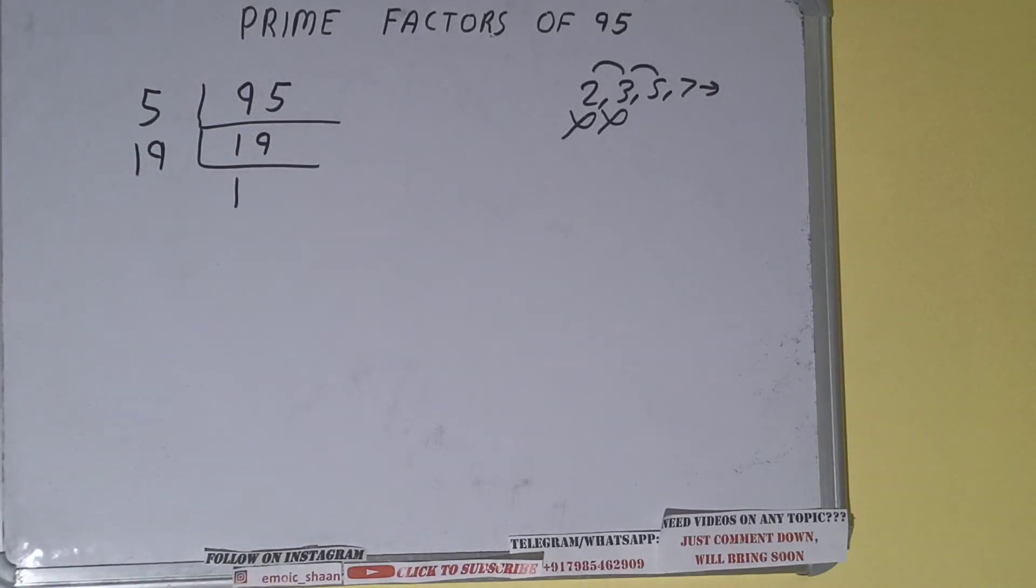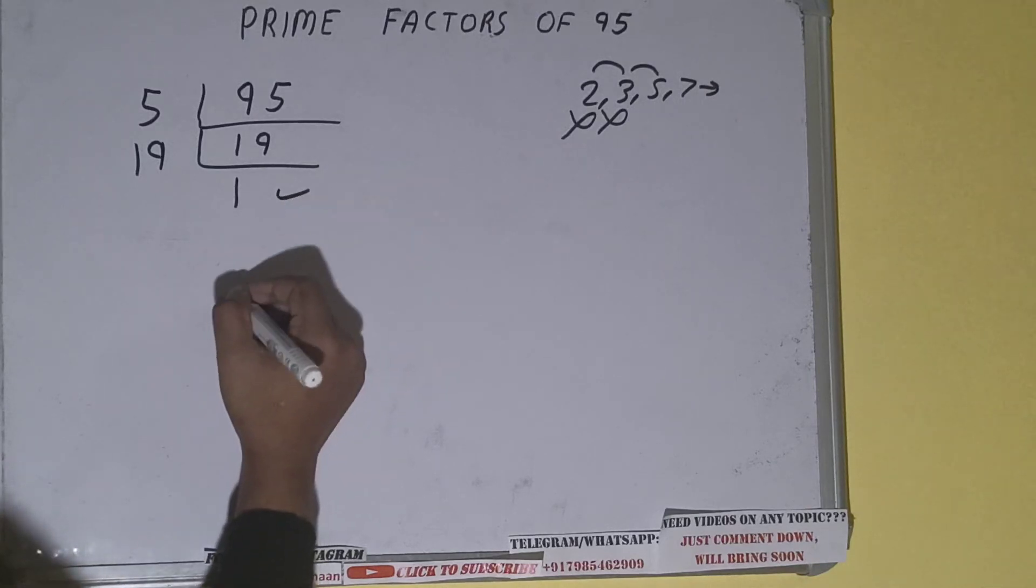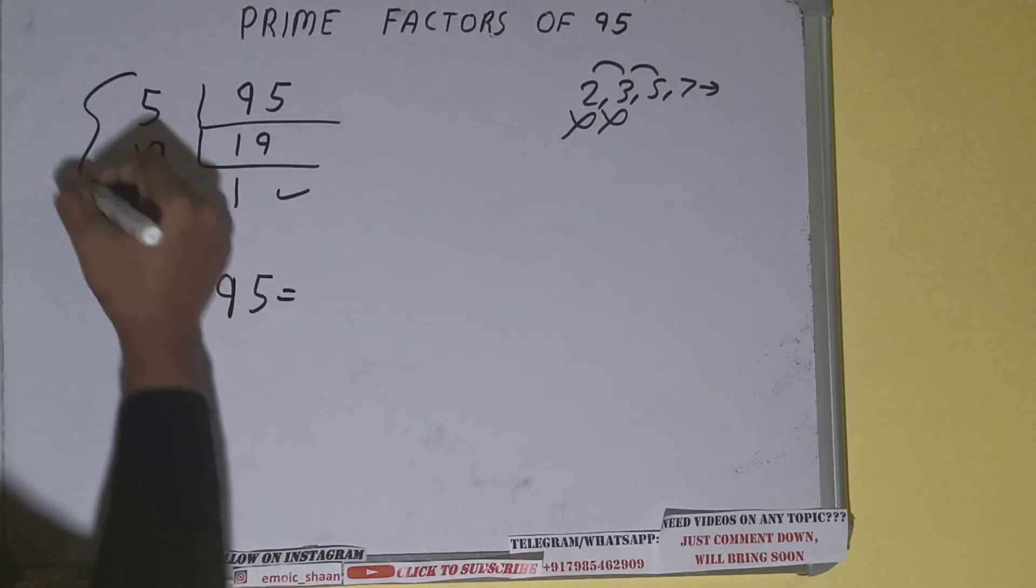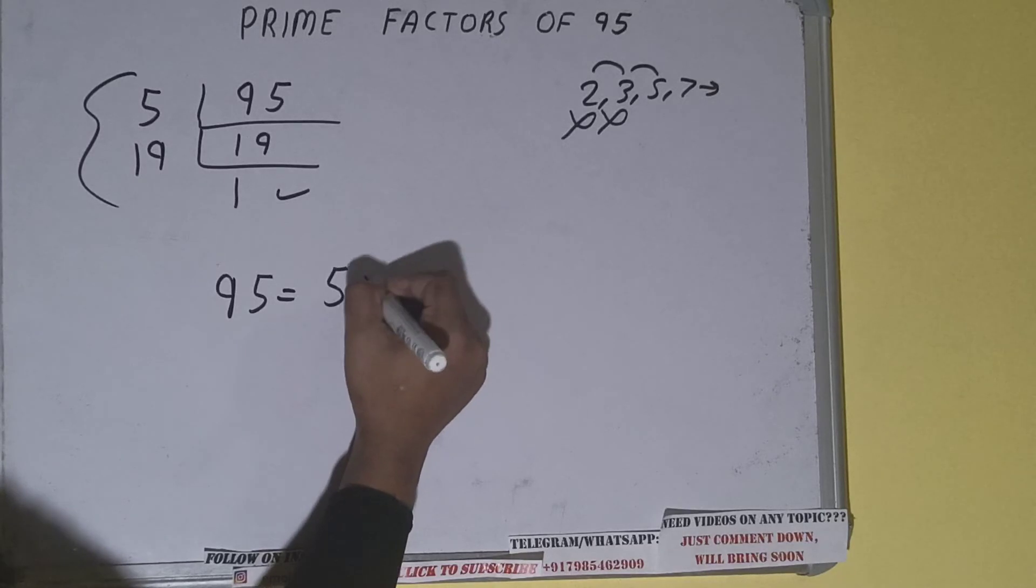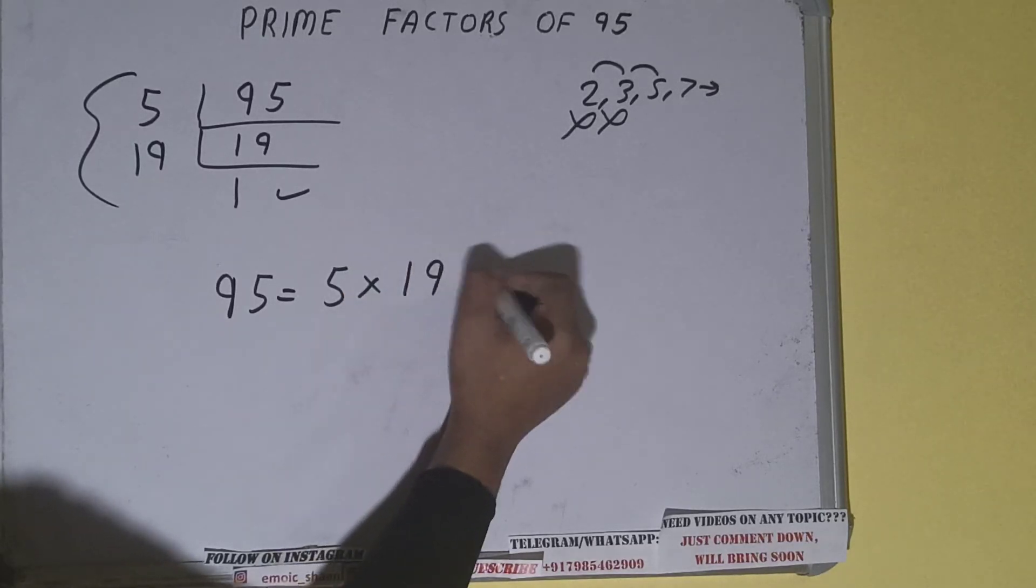And do one last thing, that is, prime factors of 95 will be whatever we have on the left-hand side, that is 5 times 19. That would be the answer. So this is all about prime factors of 95.